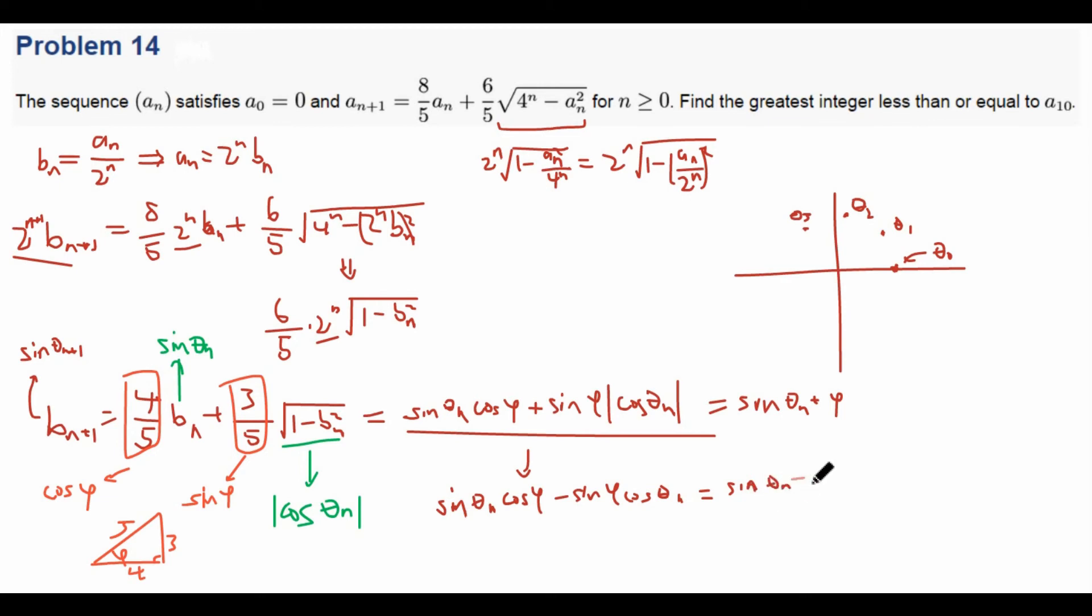So actually after theta_3, theta_4 would actually be right here. And so theta_5 would be right here. Theta_6 would be right here. And so on. So this tells us that it's repeating over theta_2 and theta_3 after theta_3. So now we notice that all the even thetas are on this point, and all the odd thetas are on this point. And we want to find theta_10, so theta_10 is right here.